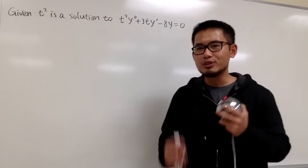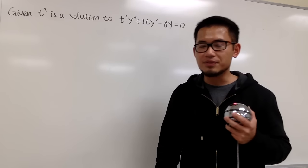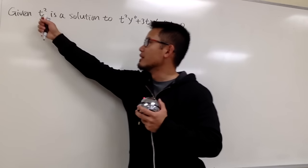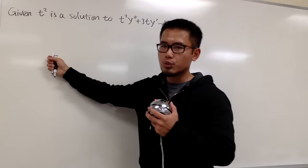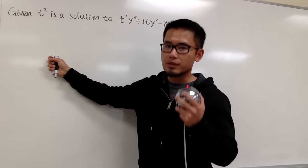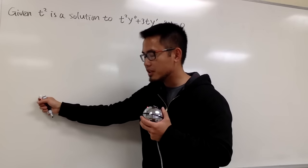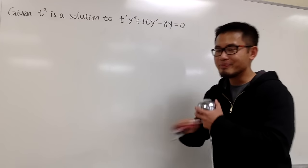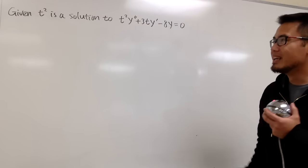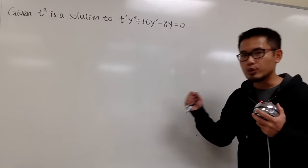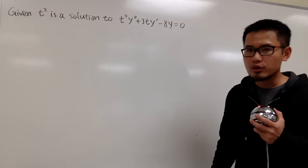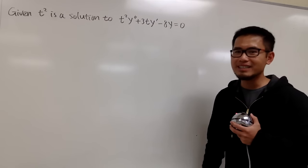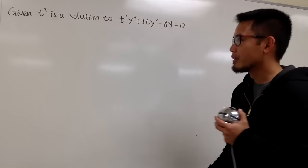Therefore, we cannot just do the things from the previous video. Namely, I cannot just say that t squared is the first building block, and for the second block just do t times t squared and say that's t cubed. No, we cannot do that. In this case, we really have to use the reduction of order to figure out what the second building block for the solution will be.